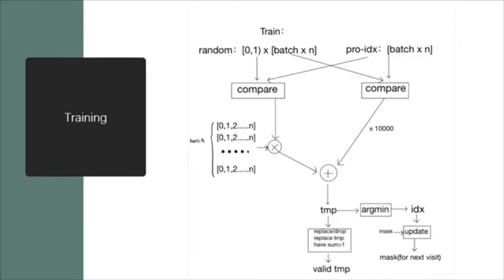We update the reward for actor network by the action it gives, and we update the mask in critic network by the output probability it gives.